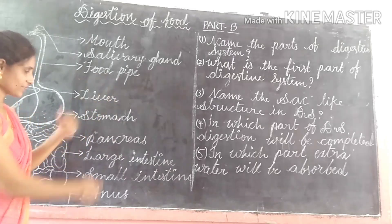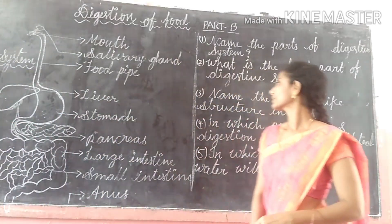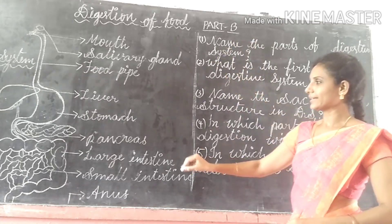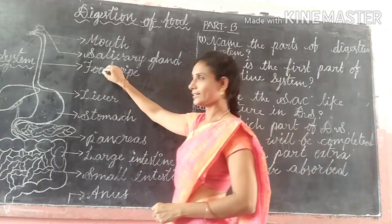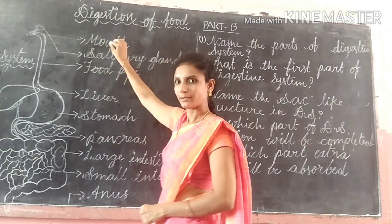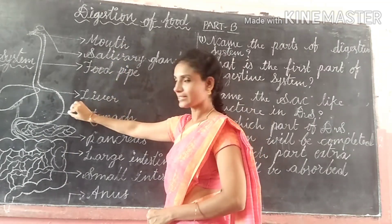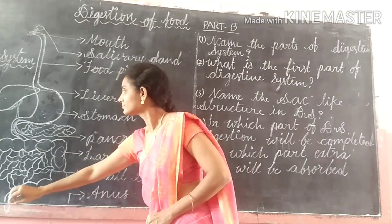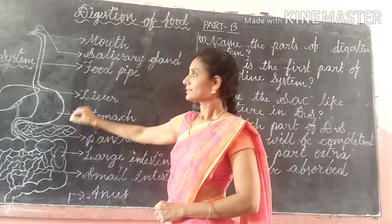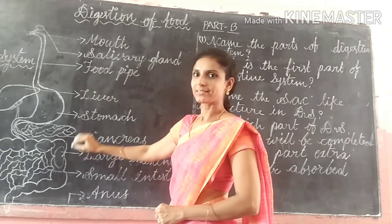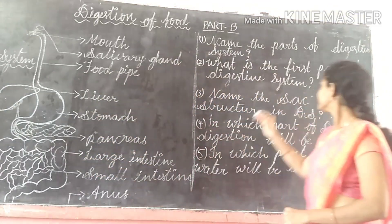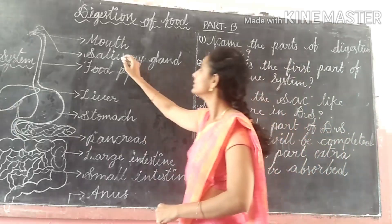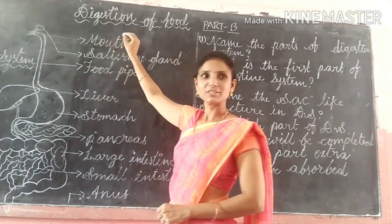Now I am going to ask some questions on this topic. First question: name the parts of the digestive system. The parts are mouth, food pipe, stomach, small intestine, large intestine, anus, liver, and pancreas. Second question: what is the first part of the digestive system? The mouth is the first part of the digestive system.